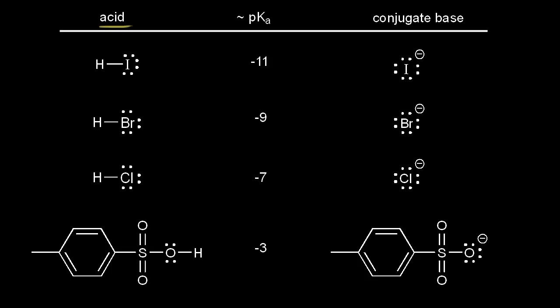On the left we have the acid — for example, hydroiodic acid, HI, with an approximate pKa of negative 11. Remember, the lower the pKa value, the stronger the acid. So on this table, with a pKa value of negative 11, hydroiodic acid is the strongest acid.